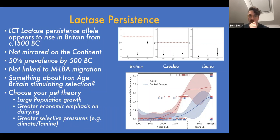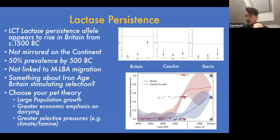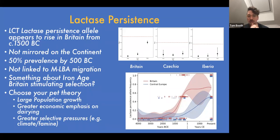When we looked at our samples, the lactase persistence allele rises specifically in Britain from the Middle Bronze Age, reaching around 50% prevalence by around 500 BC — today it's about 75% prevalent in Britain. This rise is not linked to the migration I spoke about — the people migrating to Britain don't seem to have any higher rate of this variant than local people — so something specific about the early Iron Age in Britain is stimulating selection for the ability to drink raw milk.